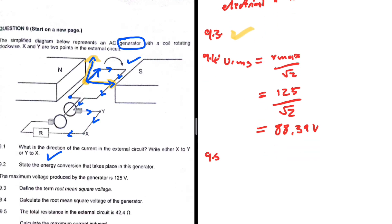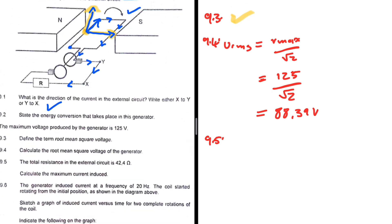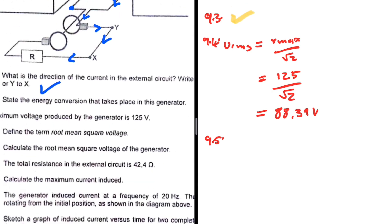9.5, the total resistance is stated to be 42.4 ohms in the external circuit. The question: calculate the maximum current induced. If we want to find the maximum current, we know that I equals V over R, but I_max, the maximum current, will be V_max divided by the resistance.